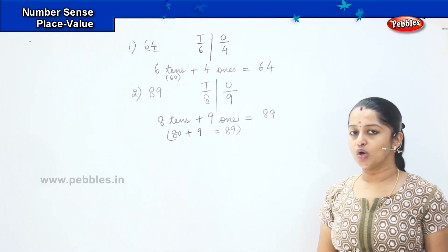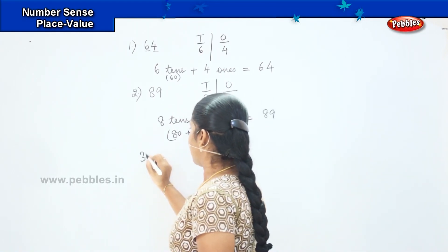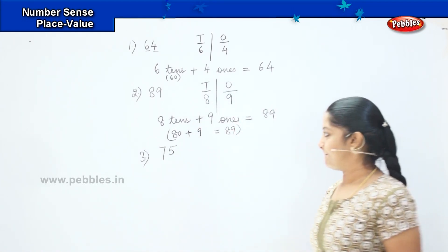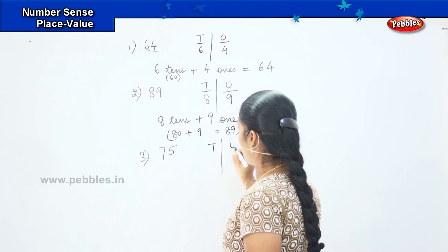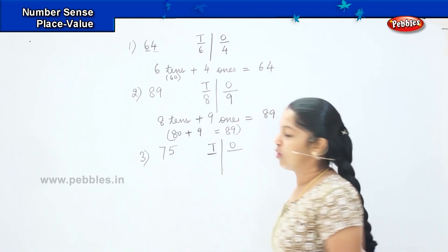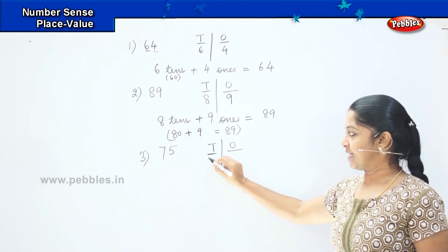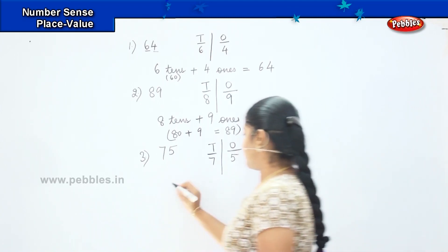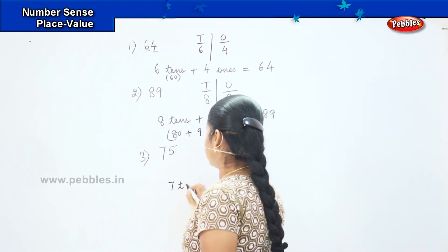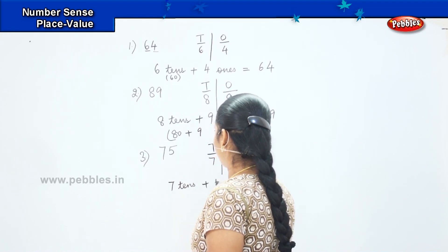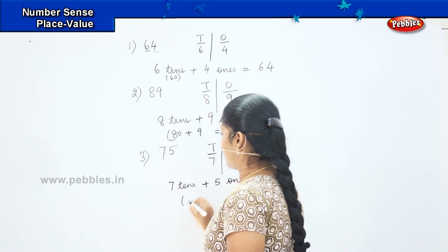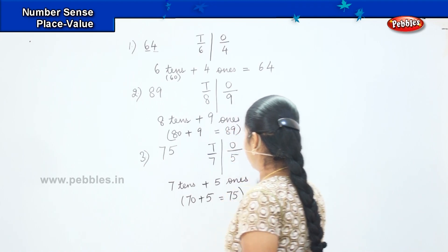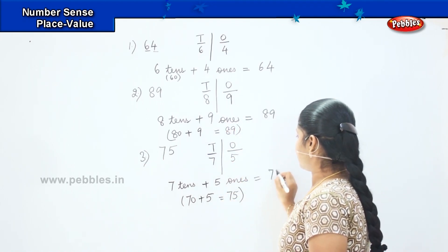Do you want to try some more? Here comes my next question, which is seventy-five. What is the first step? T and O. Seven in T and five in O. So I will write as seven tens plus five ones, which is nothing but seventy plus five equals seventy-five.